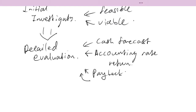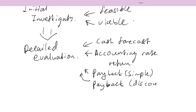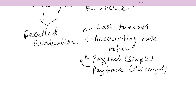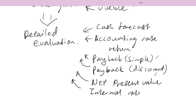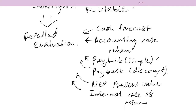The payback method has two variants: the simple payback and the discounted payback. Then of course there is the net present value method and the internal rate of return. These methods are very crucial in the detailed evaluation stage, and if these methods prove that the project is viable, you proceed to the stage where you go for approval by senior management.